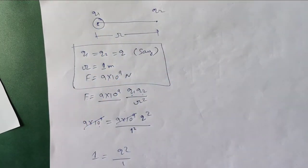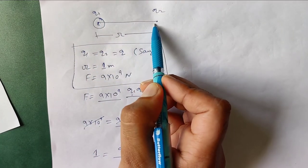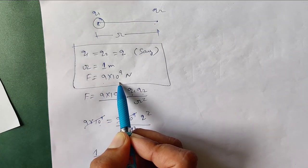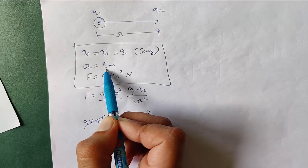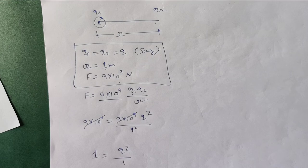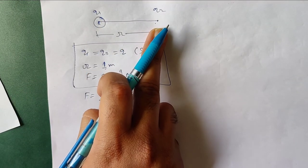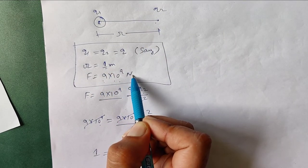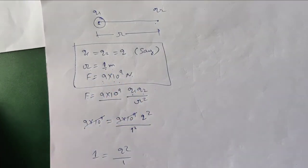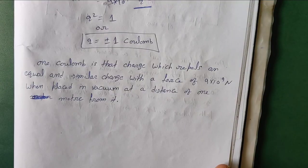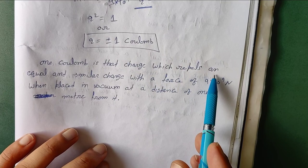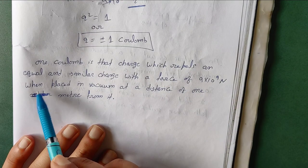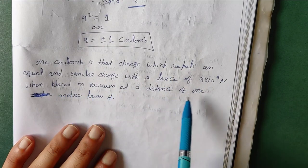So 1 Coulomb is defined as that charge which repels an equal and similar charge with a force of 9 × 10⁹ Newton when placed in vacuum at a distance of 1 meter from it.